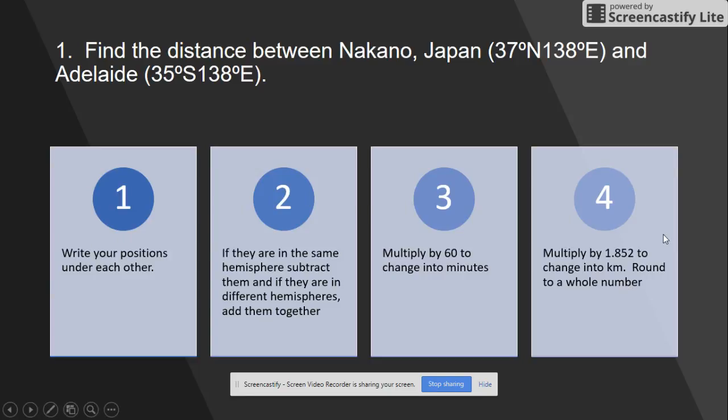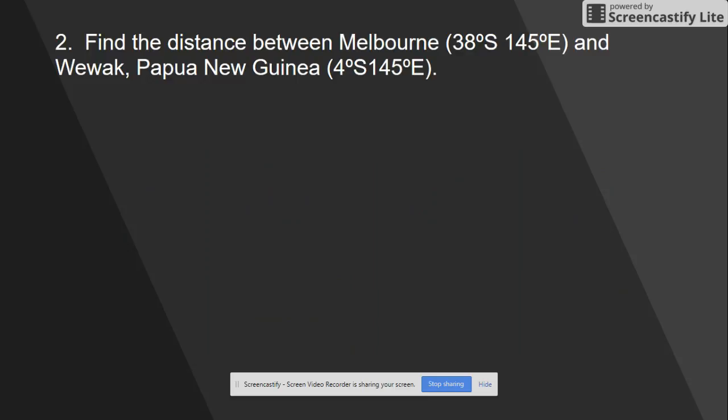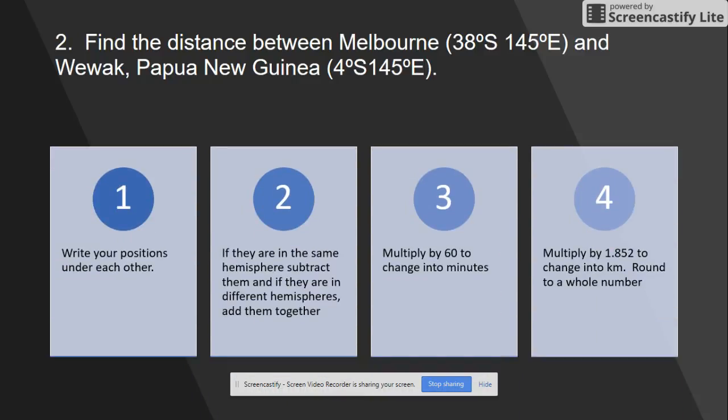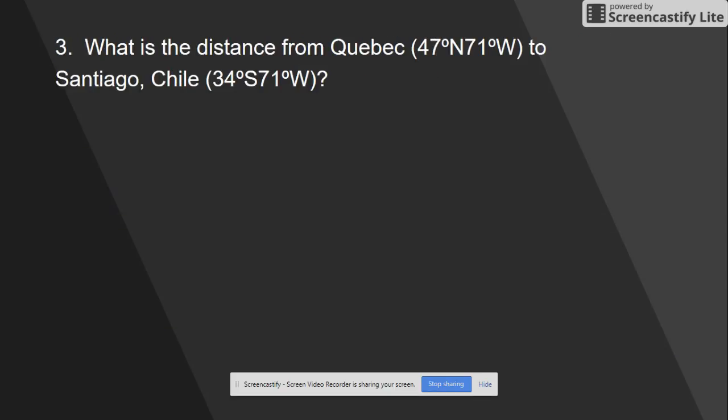For the next one, it says find the distance between Melbourne and Wewak, giving you the locations there. The last one is Santiago, Chile.